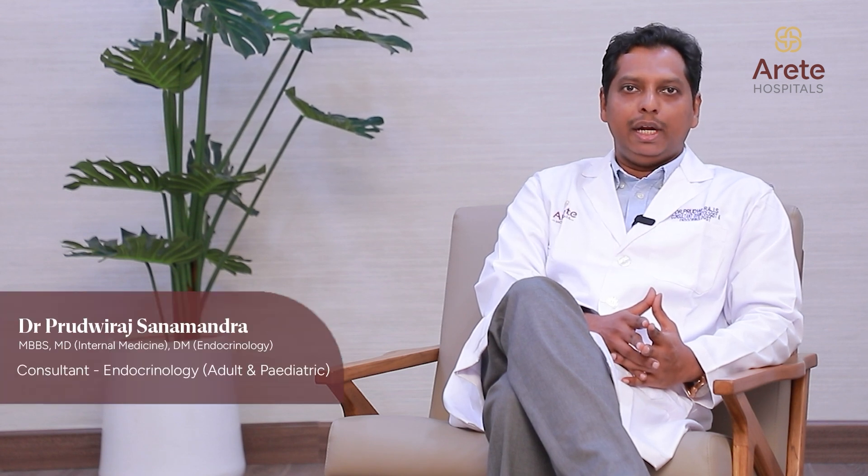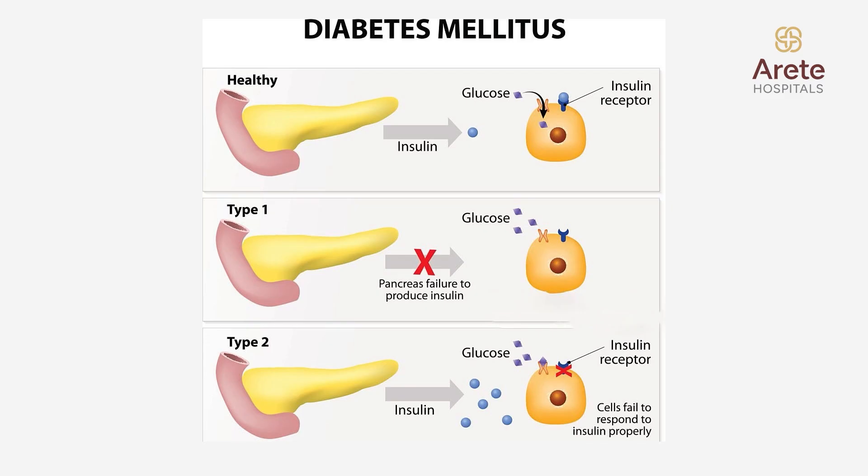Whereas type 2 diabetes pathogenesis is different — the insulin production is normal. However, the insulin mechanism is faulty, causing insulin resistance at the receptor level, causing high blood sugars in type 2 diabetes patients. So in type 1 diabetes there is no insulin secretion in the body, while in type 2 diabetes the insulin is adequately produced but not acting properly to control the blood sugars, thus causing high blood sugars.